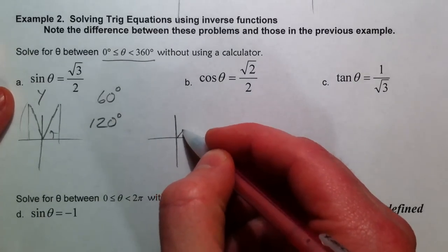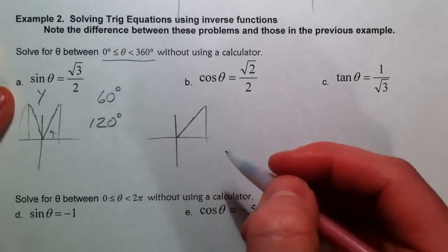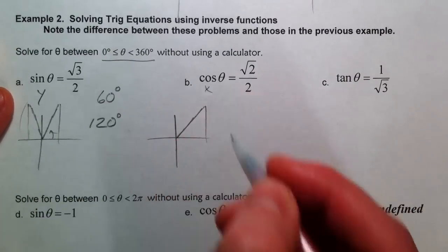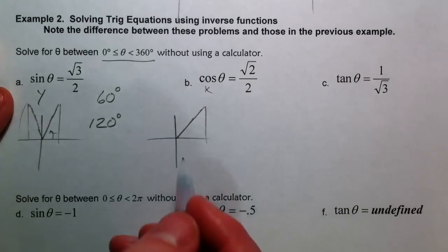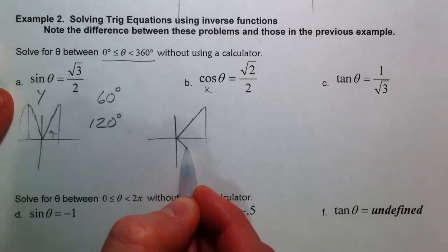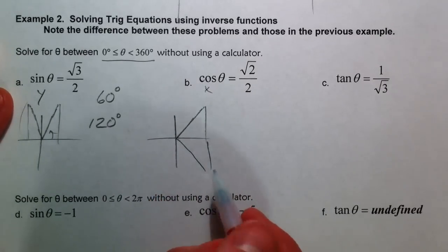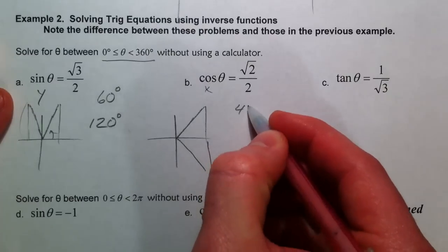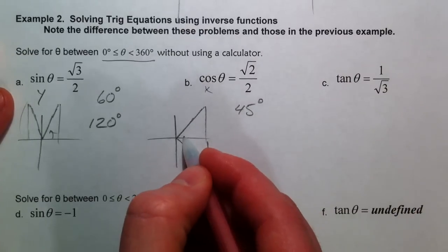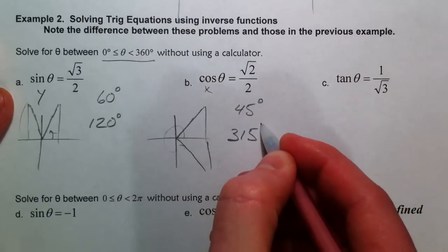When we have a root 2 over 2, that's the 45, and the cosine is an x value. So where's the x also positive? Down here. So at a 45 degree angle and at the 315 degrees.